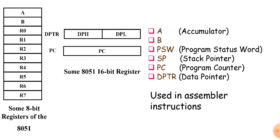The first one is the A-Register, also called the Accumulator. It is an 8-bit register used to store data temporarily. During arithmetic operations, one of the data values required for processing is stored in the Accumulator. After arithmetic and logical operations, the final result will also be stored in the A-Register.